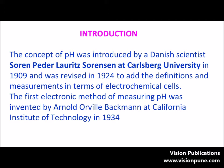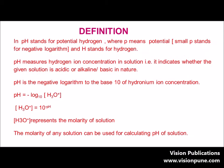pH was first introduced by a Danish scientist Soren Peder Sorensen at Carlsberg University in 1909, and it was then revised in 1924. A number of definitions were given to this concept and measurements were made by electrochemical cells. The first electronic method of measuring pH was invented by Arnold Orville Beckman at the California Institute of Technology in 1934. He was the first to discover an electronic device to measure pH.